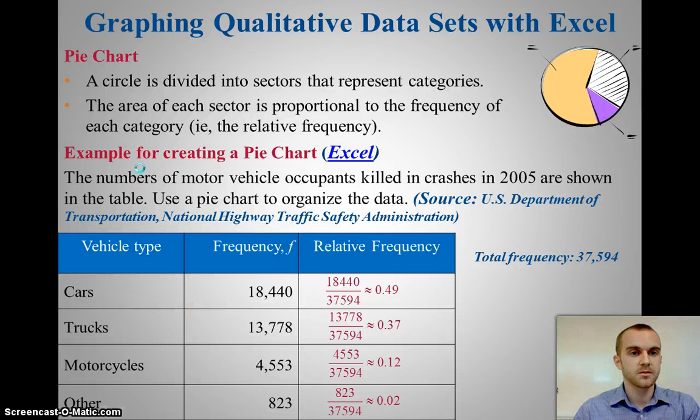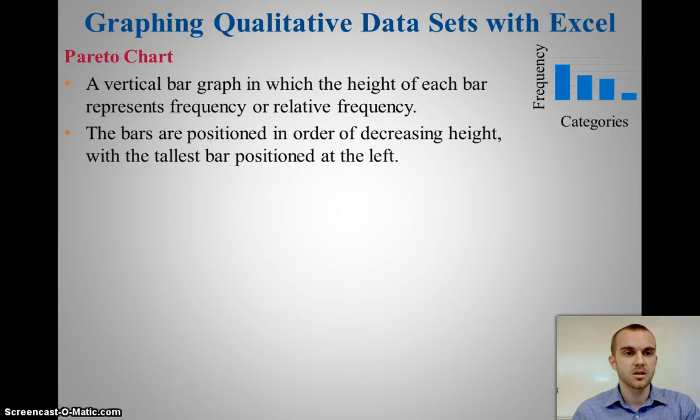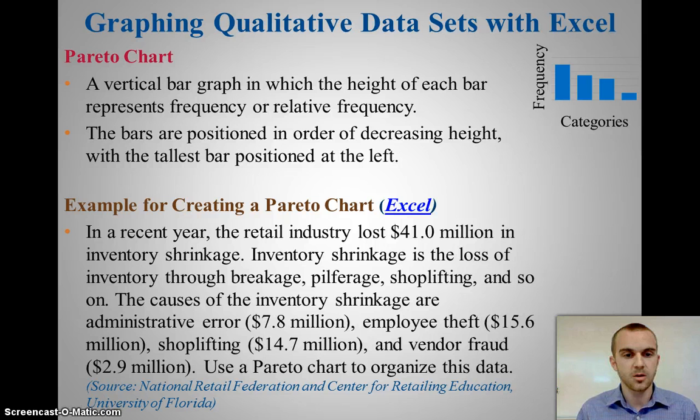So, another type of graph is called the Pareto chart. Now, the Pareto chart, it's going to take categories, but what we do is we separate them from the greatest frequency to the least frequency. So, greatest to least. And then, we just make a bar chart with it. So, say we have this problem here, where retail industry is losing money, and here's all the different ways that they're losing the money. They want us to make a Pareto chart, so we can kind of do some description of what's going on.